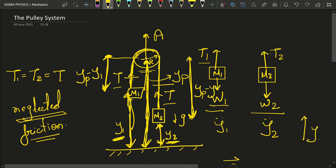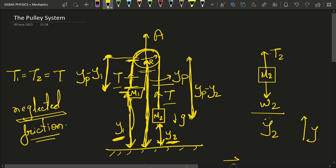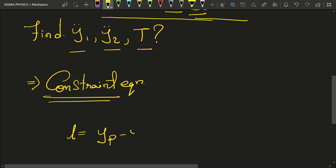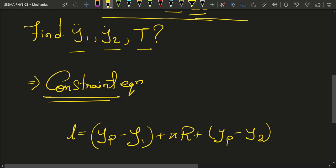So the distance from the pulley center to m2 is yp minus y2. The string also wraps halfway around the pulley, contributing a length of pi*r (half the circumference). Therefore, the total length of the string is: (yp − y1) + pi*r + (yp − y2). This might seem confusing at first, but if you watch carefully and think about it, you will understand how we arrived at this through careful reasoning.